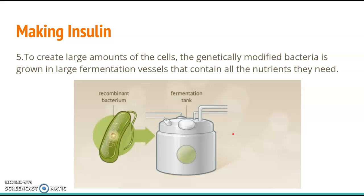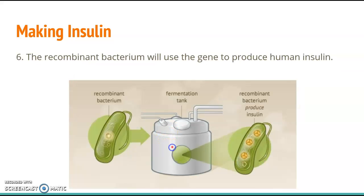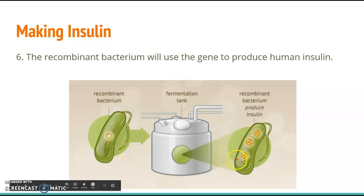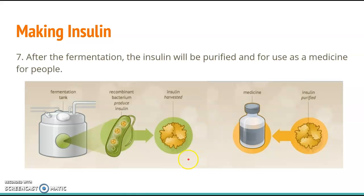To create a large amount of insulin, the genetically modified bacteria are grown in a large fermentation vessel containing all the nutrients they need. The recombinant bacteria use the inserted gene to produce the human insulin we need. After fermentation, the insulin is purified and used as medicine for people.